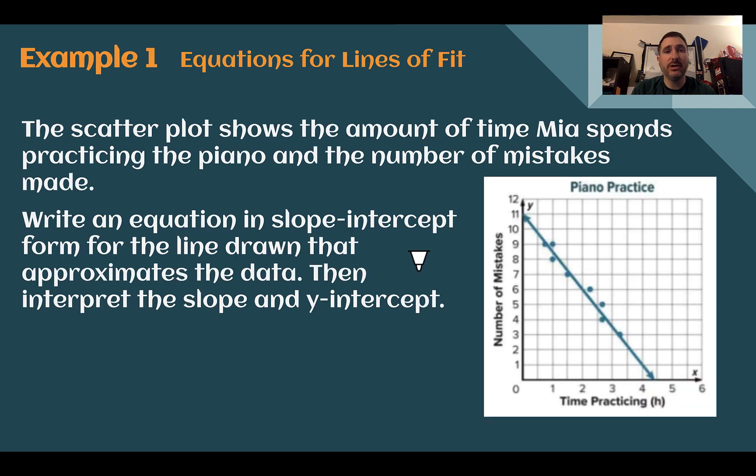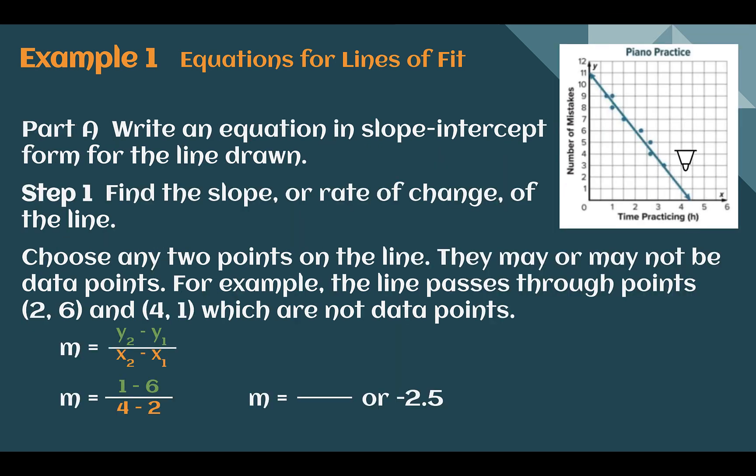Example 1, equations for lines of fit. This scatter plot shows the amount of time Mia spends practicing the piano and the number of mistakes she makes. Write an equation in slope-intercept form for the line drawn that approximates the data. Then interpret the slope and the y-intercept. So we can see here that the more time Mia spends practicing, the fewer mistakes she makes, our line trending downward. This is a negative association. What would be the equation in slope-intercept form? So we need to find the slope and we need to find our y-intercept and then interpret it like it says. So let's write our equation.